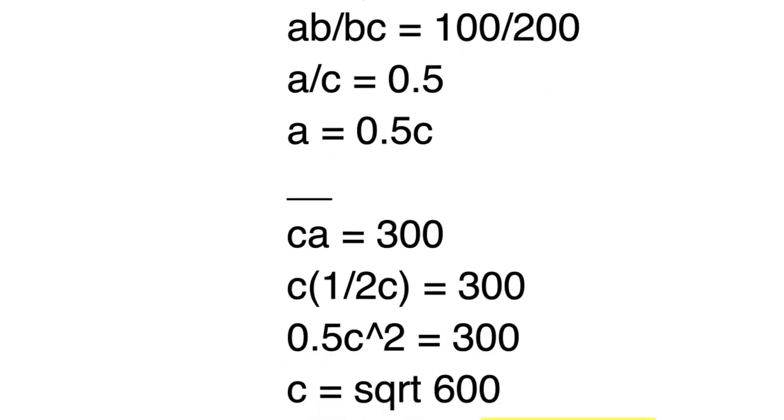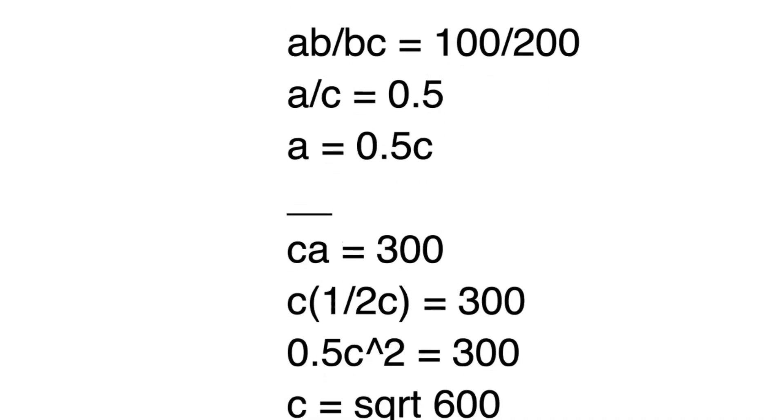So you have CA equals 300. Just plug in 0.5C for A, and we get C times 0.5C equals 300, so that is just 0.5C squared equals 300. Divide both sides by 0.5.